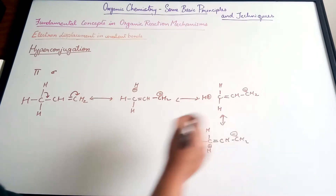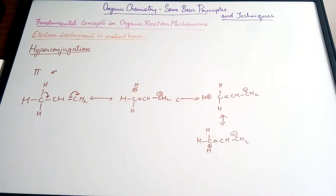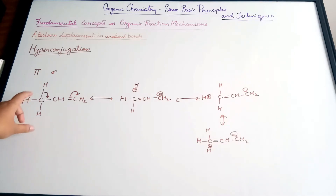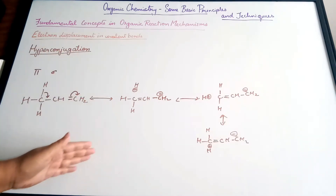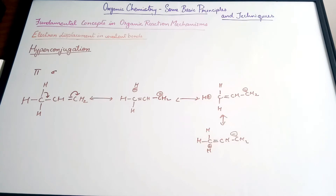Since there is no bond between carbon and hydrogen in these structures, this is also called no-bond resonance. These contributing structures are called hyperconjugated structures. More is the number of alpha hydrogen atoms — the hydrogen atoms attached to the alpha carbon — more will be the hyperconjugated structures, and so more will be the stability.